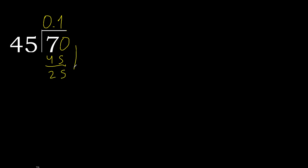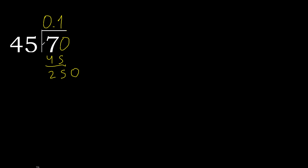Next — there is no next digit, therefore complete, always complete with 0. So we have 250. 45 multiplied by 6 is 270 — greater. 45 multiplied by 5 is 225. Subtract: remainder is 25.